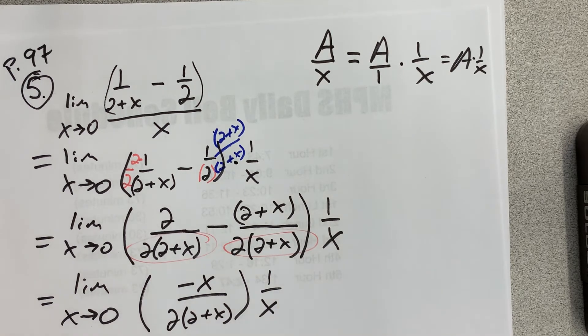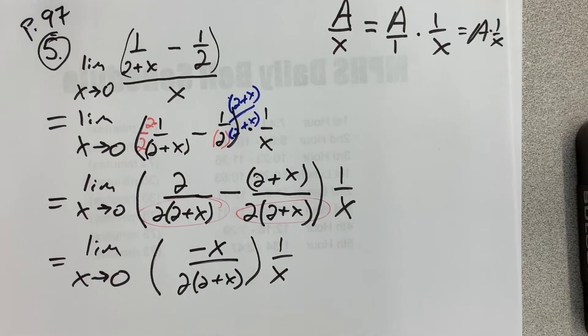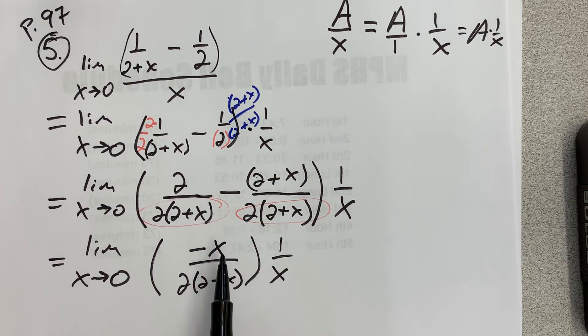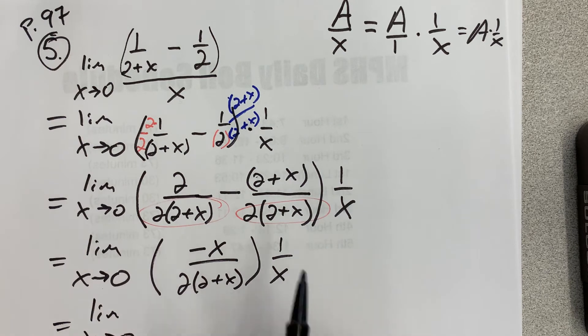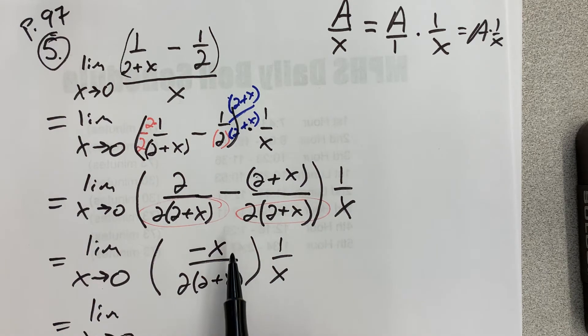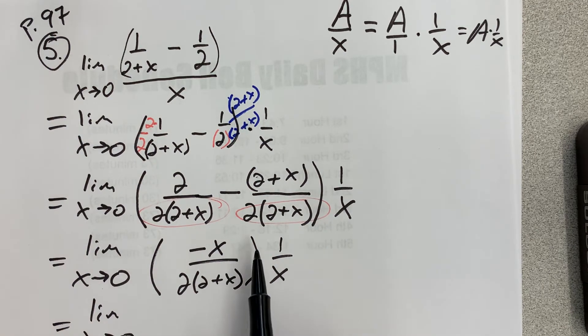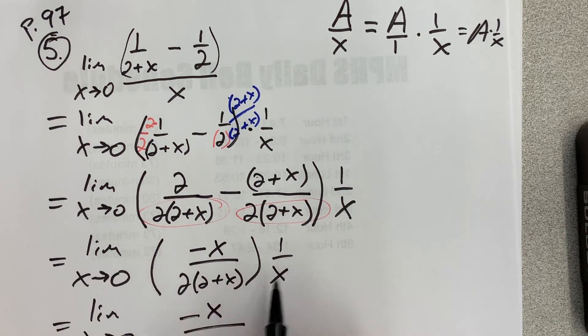Now, this next step you don't really need to show, but I'm going to because I'm recording it and I want it to be recorded so that students can see it. But you could just right now slash the x's. x over x simplifies away. But I'm going to make it even more explicit. So I'm going to write the limit as x approaches 0. And I'm going to multiply these two fractions together. When you multiply fractions, you multiply straight across the top, straight across the bottom. So I get negative 1x divided by 2 times x times 2 plus x.